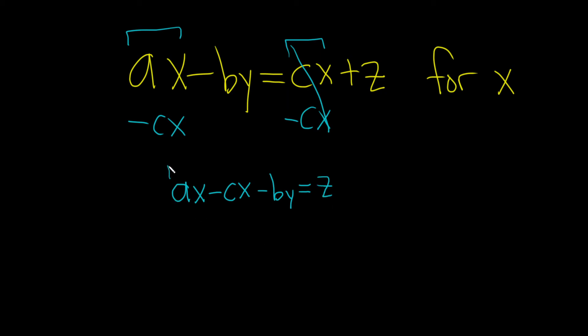Okay, we have these on this side, but there's still this term here we need to get rid of. Since it's being subtracted, we can add it to both sides like this, plus by plus by. These cancel. So we have ax minus cx equals z plus by.